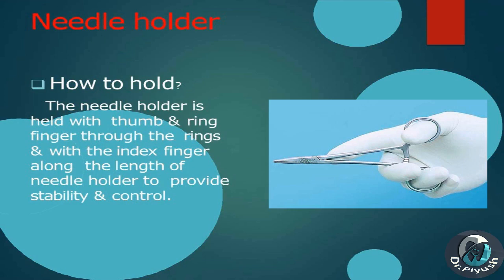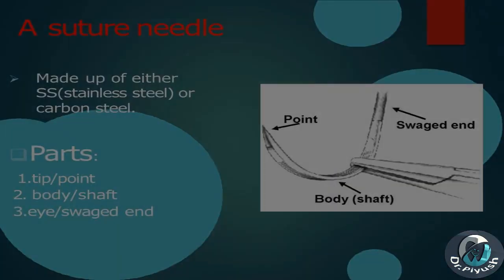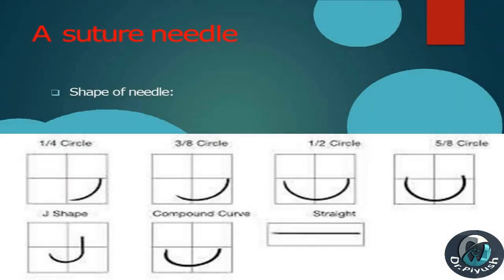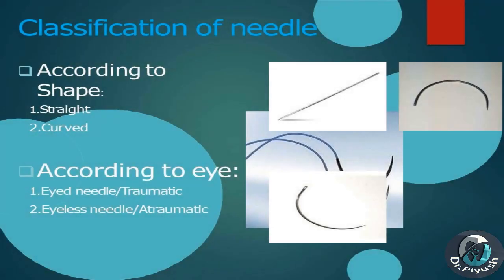How to hold the needle holder: held with thumb and ring finger through the rings, and with the index finger along the length of the needle holder to provide stability and control. A suture needle is made up of either stainless steel or carbon steel. Parts: 1. Tip/Point, 2. Body/Shaft, 3. Eye/Swaged End.